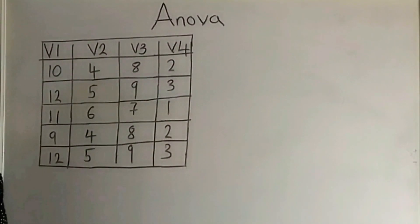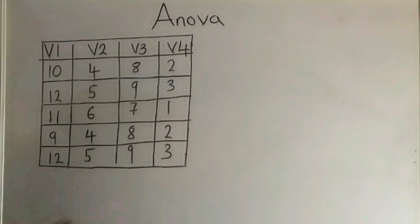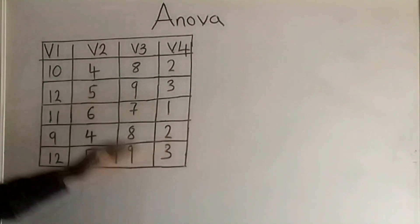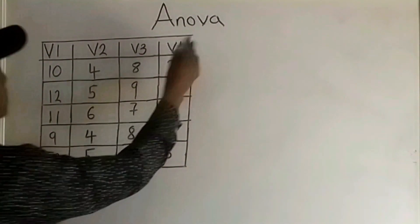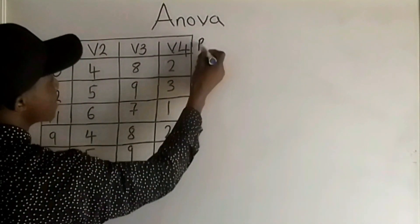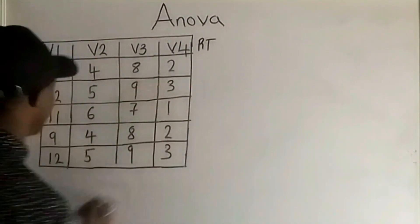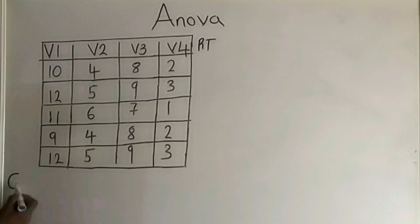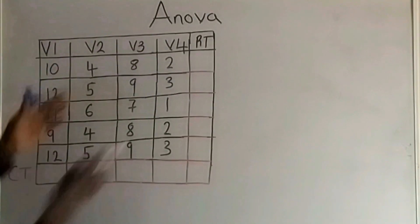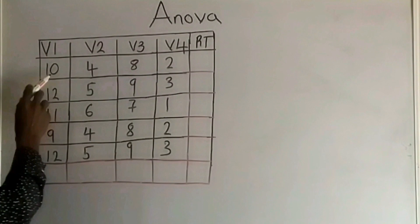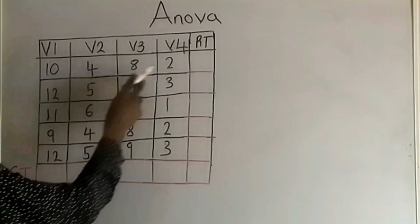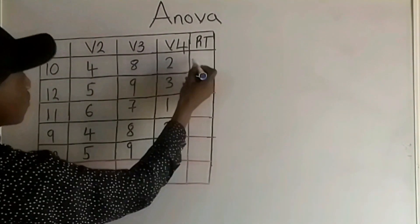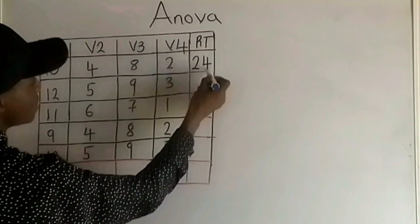To solve this question, the first step is to pick the row total and the column total — that is the summation of each row and the summation of each column. I am going to add another column for the row total, represented as RT. For the first cell, I am going to add 10 plus 4 plus 8 plus 2. That is 24.